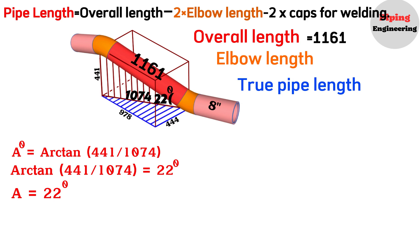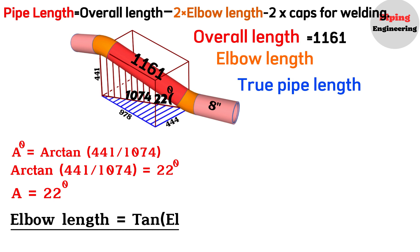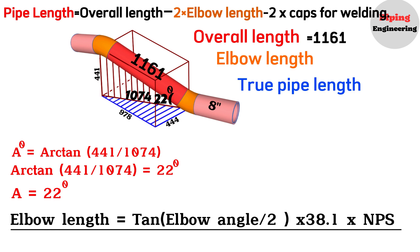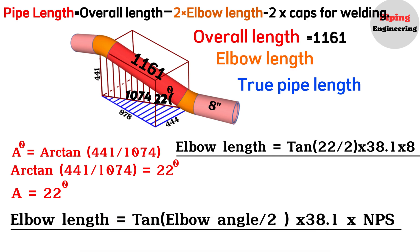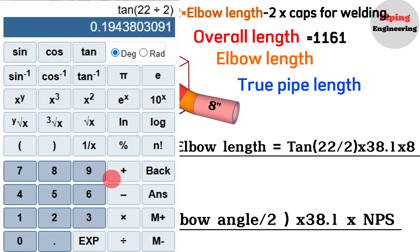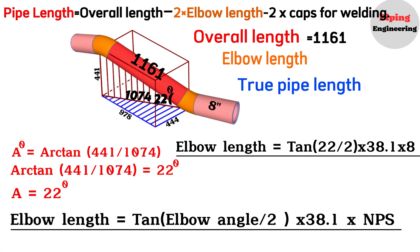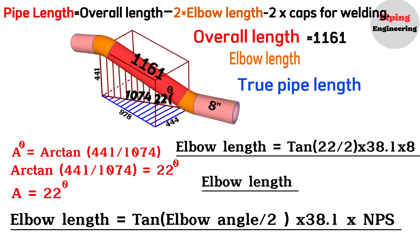Now we should find the length of the 8-inch 22-degree elbows. We will use this formula: elbow length equals the tangent of elbow angle divided by 2, times 38.1, times the nominal pipe size (NPS) of the elbow. Substituting our values, elbow length equals the tangent of 22 divided by 2, multiplied by 38.1, multiplied by 8. Using a scientific calculator, this equals approximately 59 mm. So the length of the 8-inch 22-degree elbow is 59 mm.